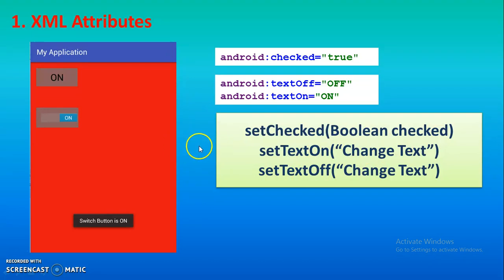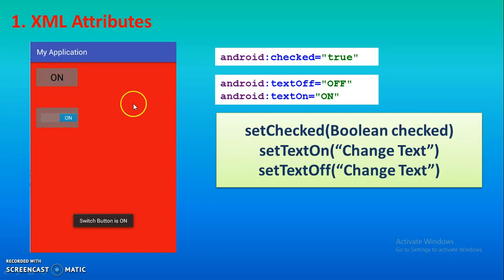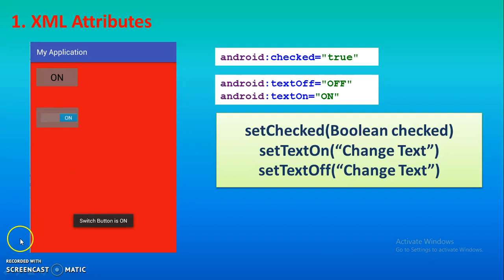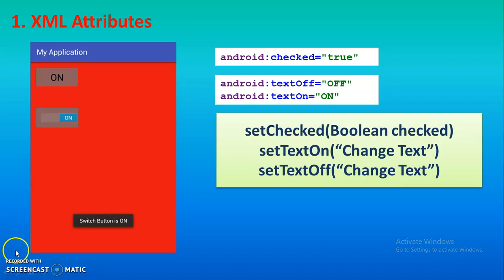So this toggle and switch button is very simple — it just has two states: on and off. By default the state is off, and by using this bunch of code you can play with the switch and toggle button. I hope you understood this basic tutorial. In the next tutorial we will go into Android Studio and do the programming practically. Thank you.